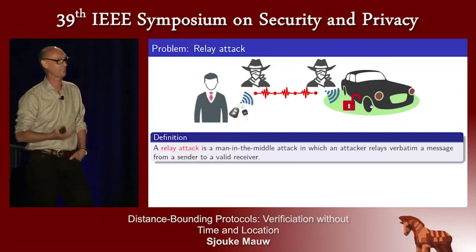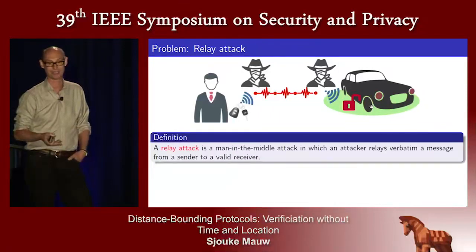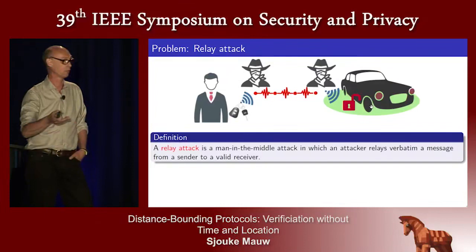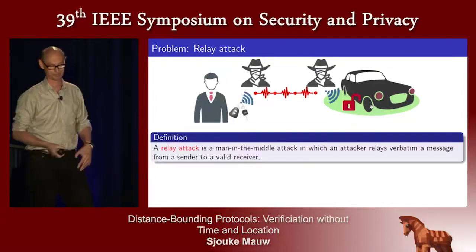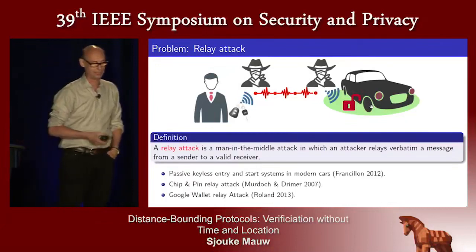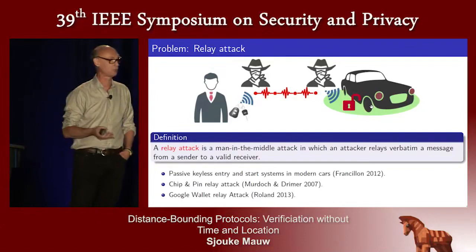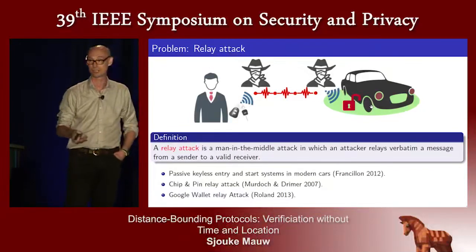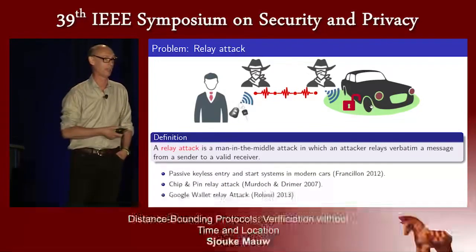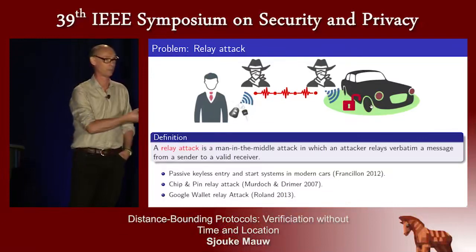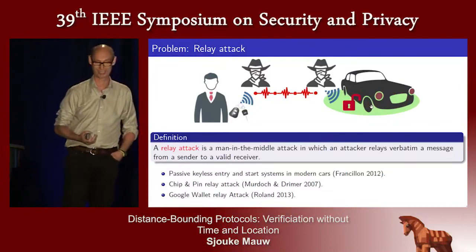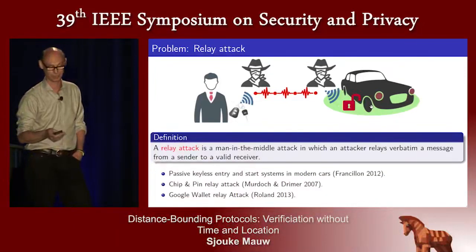The typical attack is called the relay attack, which is a man-in-the-middle attack where the attacker simply forwards every communication to the other party, effectively winning some distance. These attacks have been proven in practice — not only on cars, but also on smart card payments. Murdoch and Drimer in 2007 proved you can fool someone into thinking they're buying cigarettes while actually buying a diamond. A Google Wallet attack was also reported in 2013.